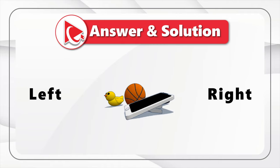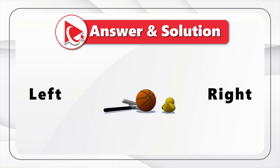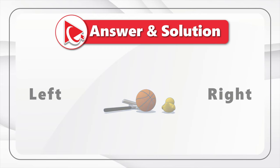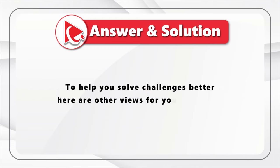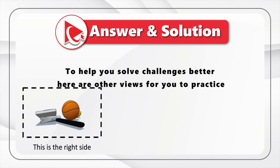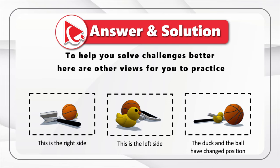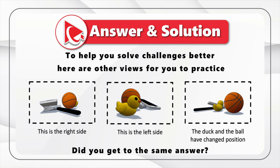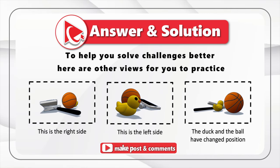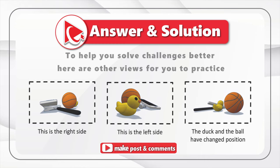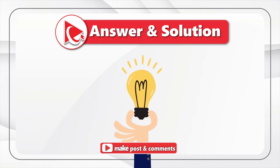We frequently see these types of questions on the test. To help you solve these challenges, here are the views of the objects from different sides — from the right, from the left, and with the duck and ball having changed positions. Did you get to the same answer? If not, please post your answer and solution in comments, along with any tips on how to solve these types of challenges.